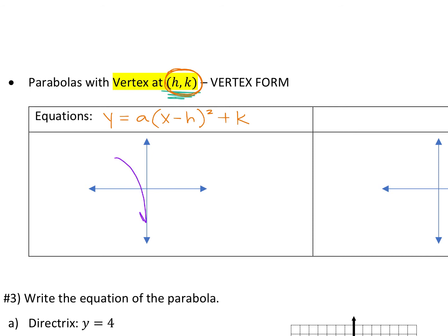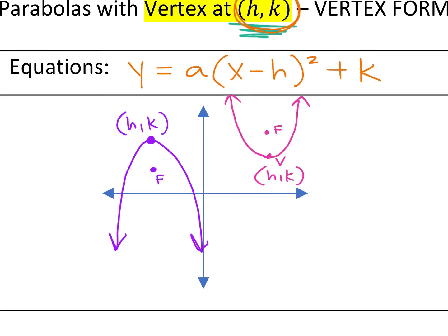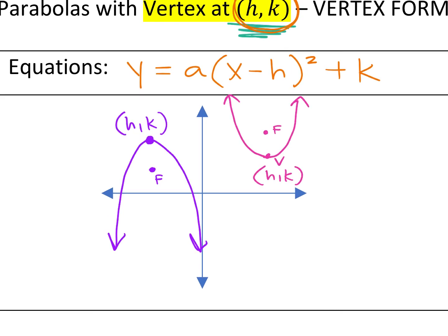Your first equation is y equals a times (x minus h) squared plus k. This means your vertex is at the point (h, k). Remember doing this when we talked about parabolas a few chapters back? Your graphs now are not going to be starting from (0, 0). Your C value now is not any different except that you're not starting from zero anymore. C is how far it is from the vertex to the focus.